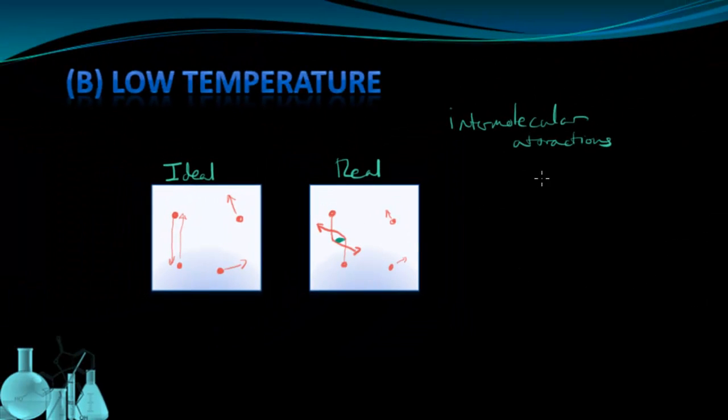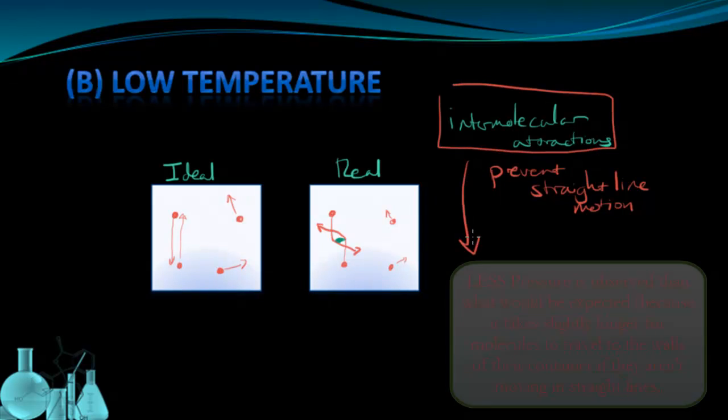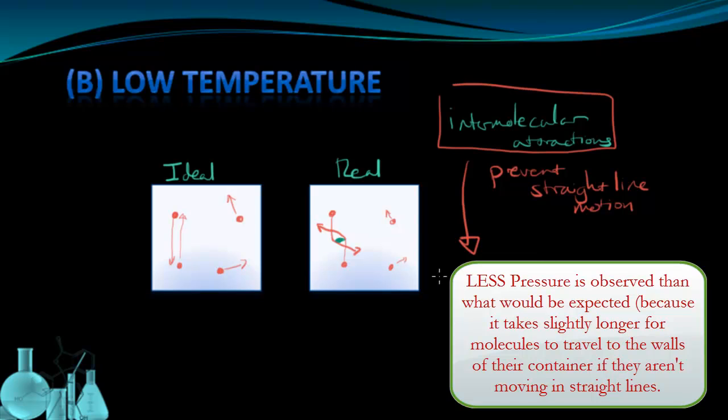So the fact that intermolecular attractions prevent straight line motion, particularly at low temperatures, means that it's going to take slightly longer than you would expect for a molecule to reach the walls of the container for a collision. And those collisions generate pressure. So because of the presence of intermolecular attractions, we see less pressure than we would expect to see because it's taking the molecules a little bit longer to reach the walls of the container and cause a collision.